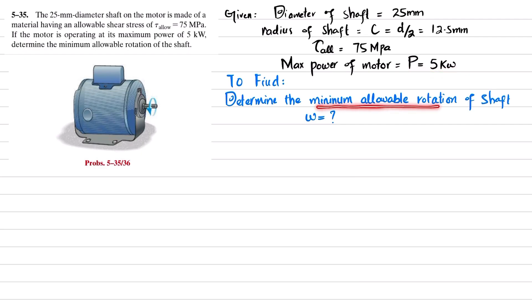You have to determine the minimum allowable rotation of this shaft. So let's start with the solution. As we know, power is equal to torque times angular velocity, so we are interested to find this rotation or angular velocity of the shaft. So ω is equal to power divided by torque. We will find this torque first.